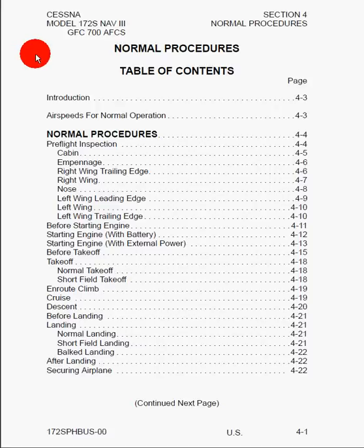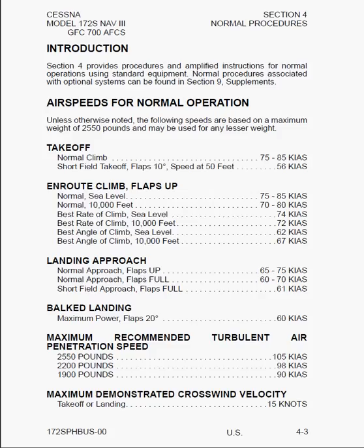In this tutorial, I'm going to cover Section 4 of the Pilot's Operating Handbook for the Cessna 172S, which contains information on normal procedures. As always, the section starts with the Table of Contents, which itemizes all the information to be discussed. The introduction states that Section 4 provides procedures and amplified instructions for normal operations using standard equipment.